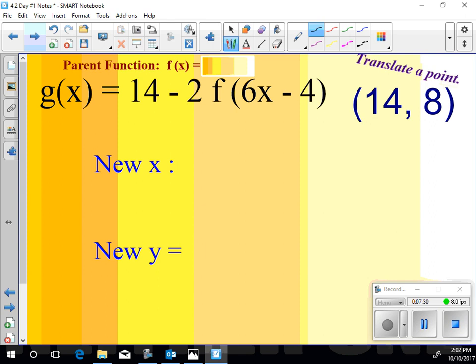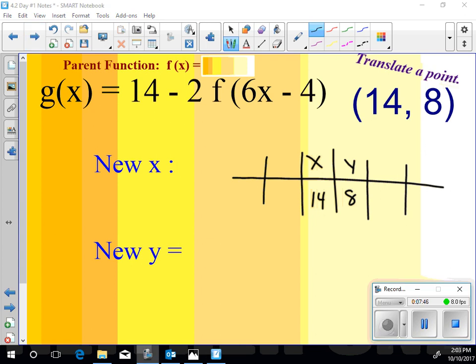Okay, so again, keep it simple. Give yourself a nice little chart. My x value is 14. My y value is 8. Let's talk about those transformations. We want to volunteer their knowledge and services here. Yeah, let's add 4 and multiply by 1 sixth. So I add 4, I get 18. I multiply by 1 sixth, I get 3. Sweet, I got half of my new points.